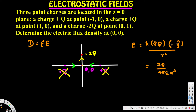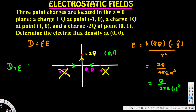Now for the electric flux density D = ε·E. We can simplify: canceling 2 and 4 gives q/(2πε₀r²). The distance r from origin to (0,1) is 1, so r² = 1. This gives D = ε · q/(2πε₀). Epsilon and epsilon naught cancel, giving a final result of D = q/(2π) coulombs per meter squared.